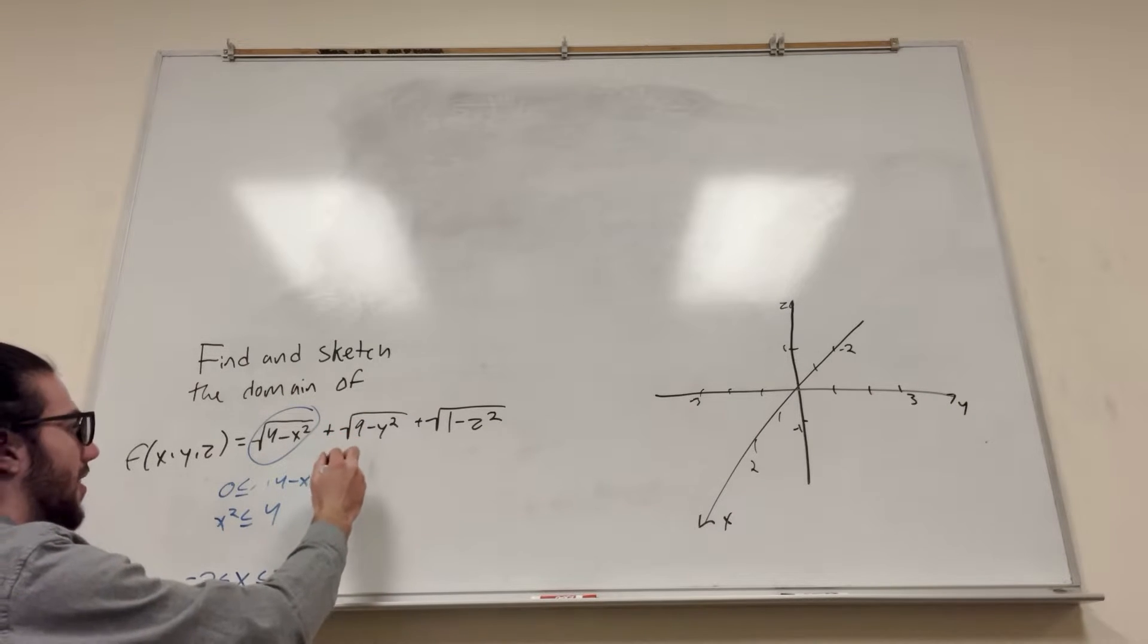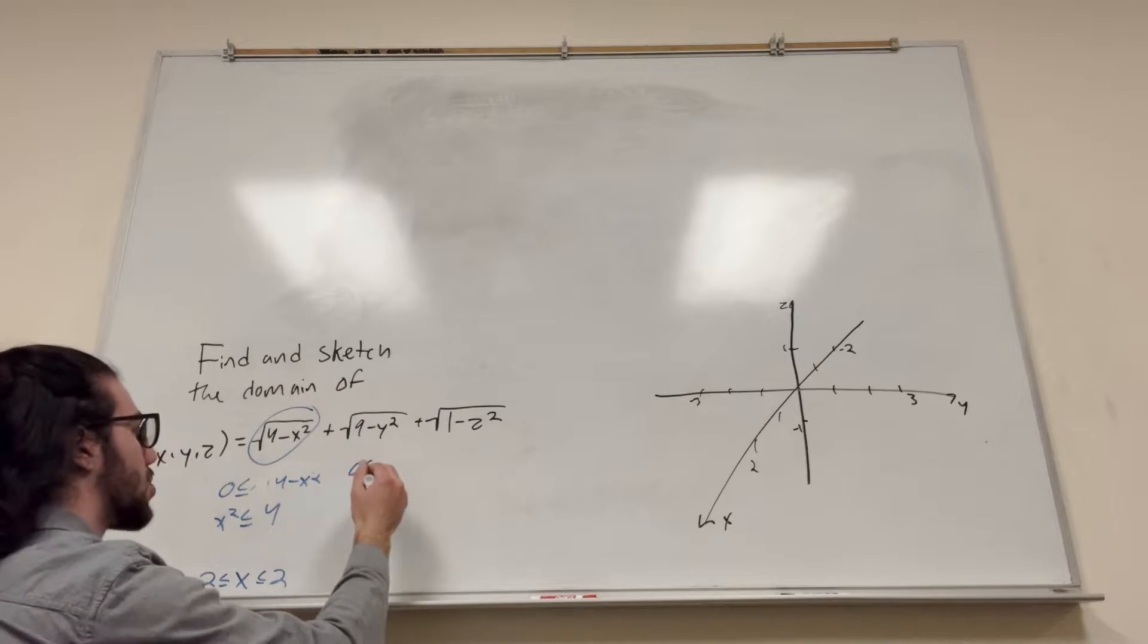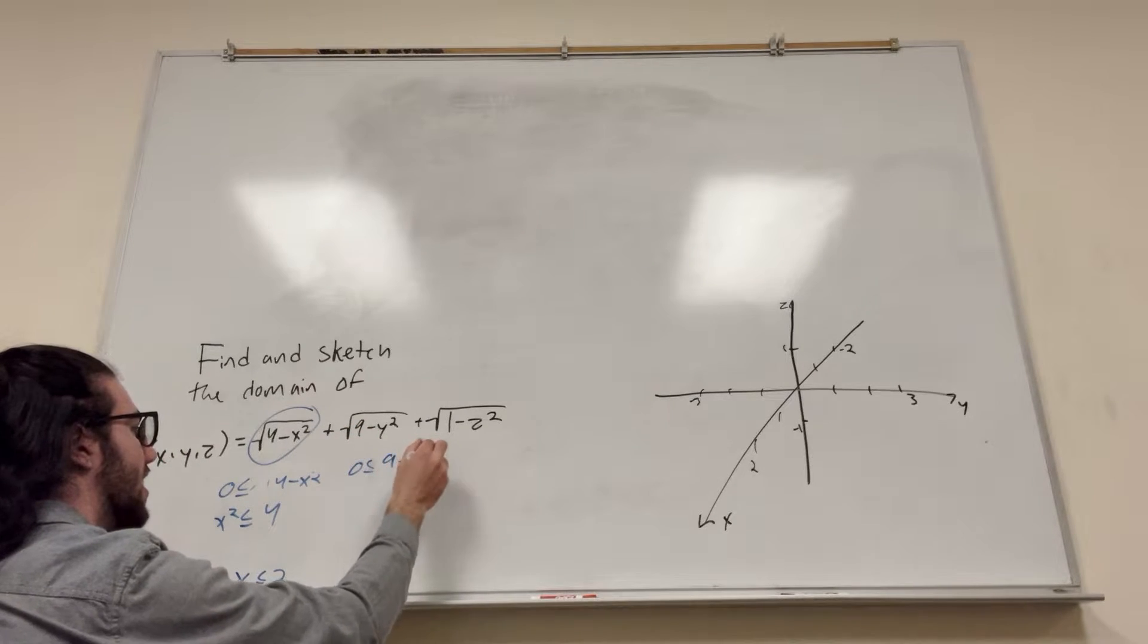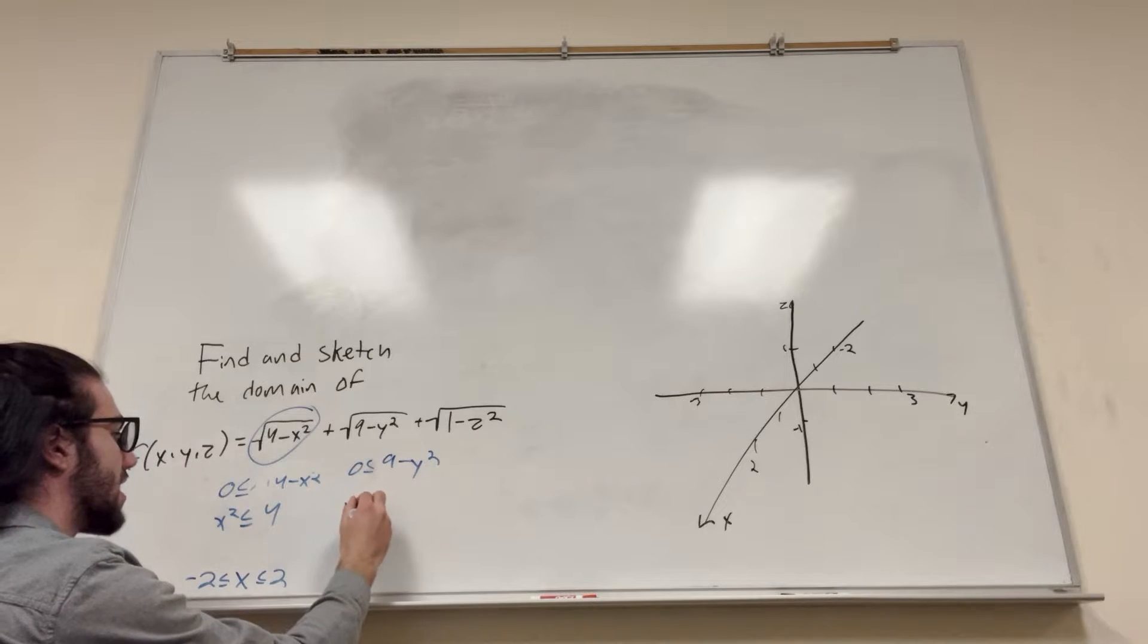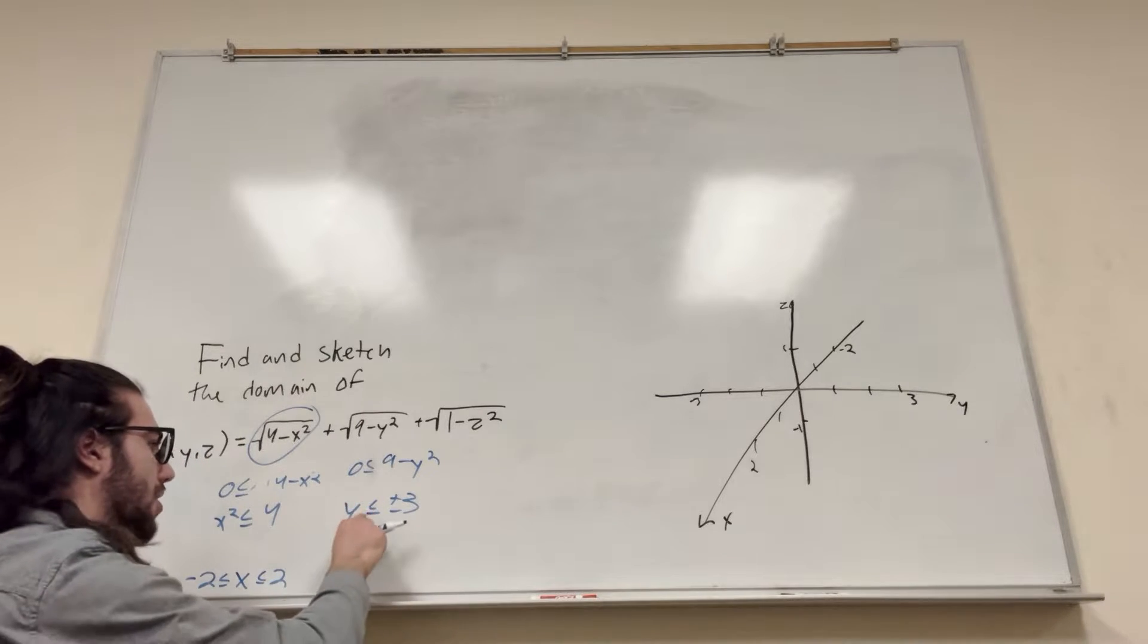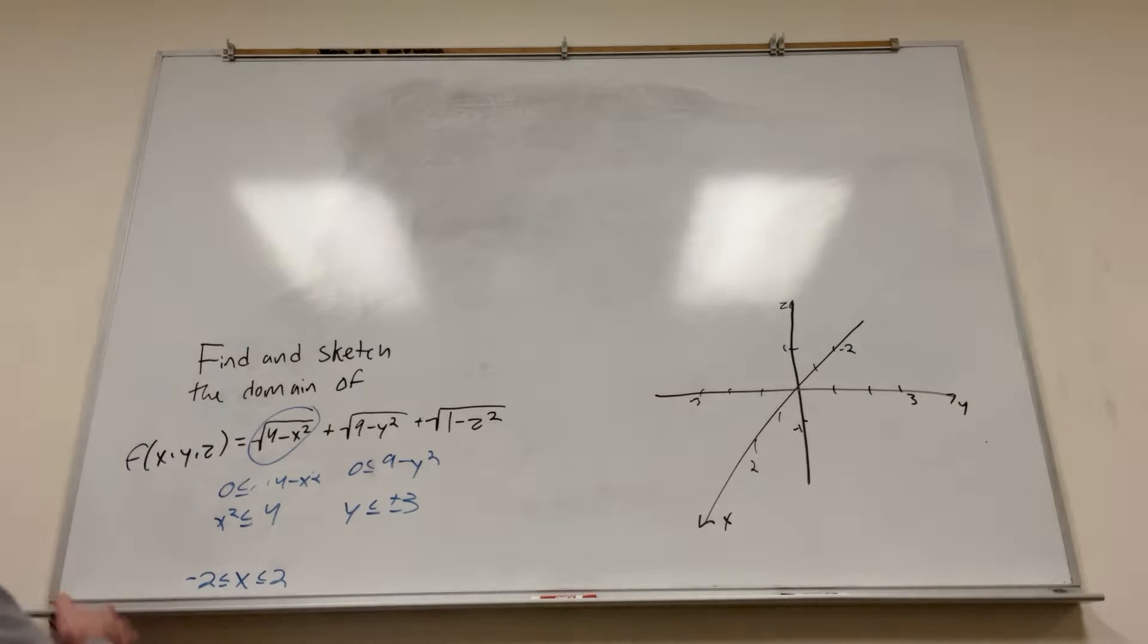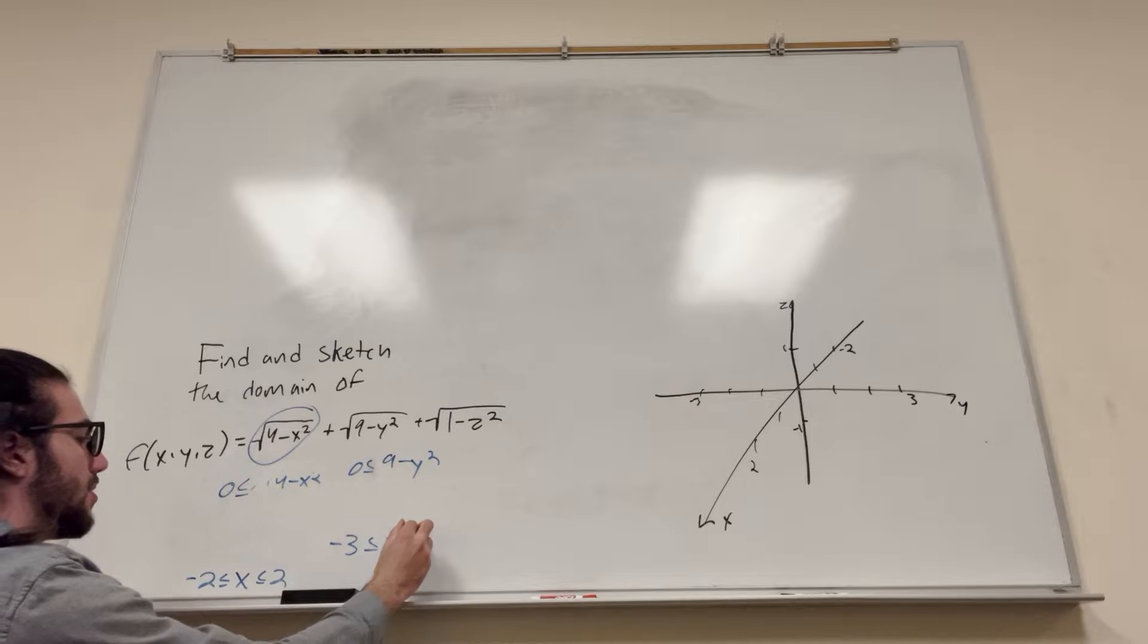Let's do it for the rest of them. Zero is greater than or equal to square root of nine minus y squared. If you square both sides and move the y over, you're going to see that y is less than or equal to plus or minus three. You probably don't write it like that though. So it's going to be negative three is less than or equal to y is less than or equal to three.